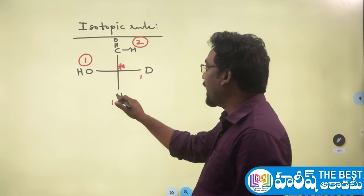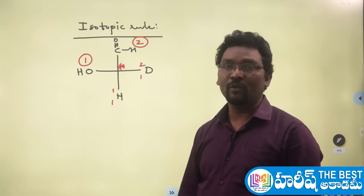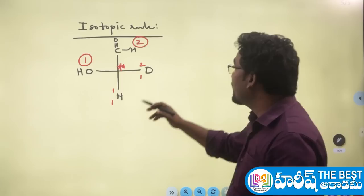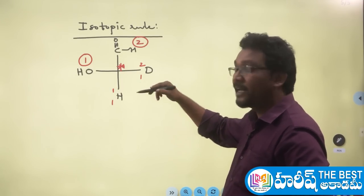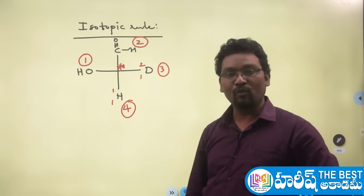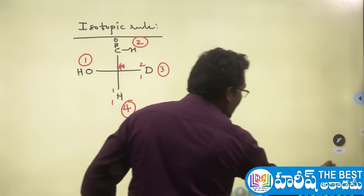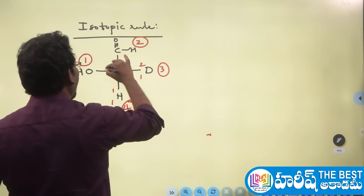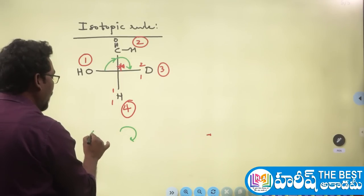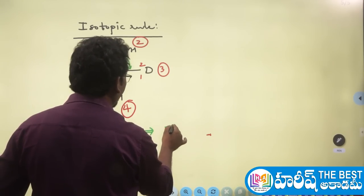The isotope with the highest mass number gets the highest priority. Deuterium (mass number 2) gets a higher priority than protium (mass number 1). Assigning: hydroxyl group = 1st, aldehyde carbon = 2nd, deuterium = 3rd, hydrogen (protium) = 4th. View from 1st to 2nd to 3rd — clockwise. The 4th group (H) is on the vertical line. Clockwise on vertical = R configuration.